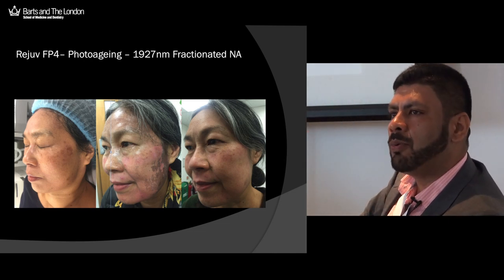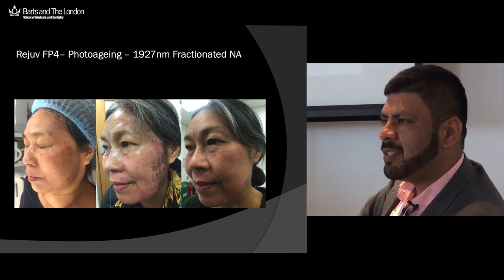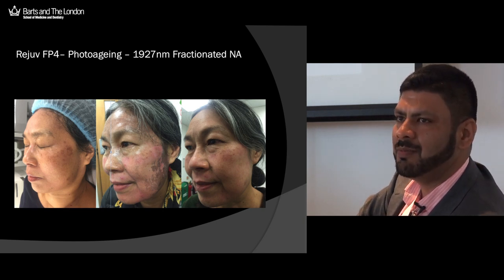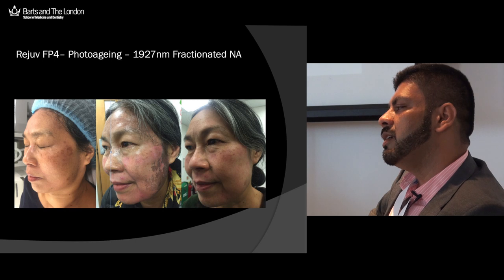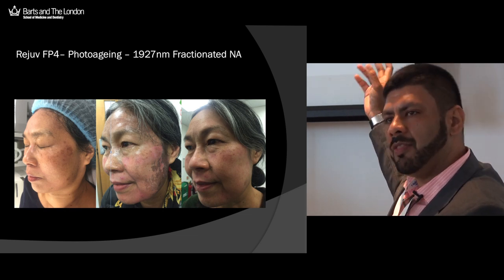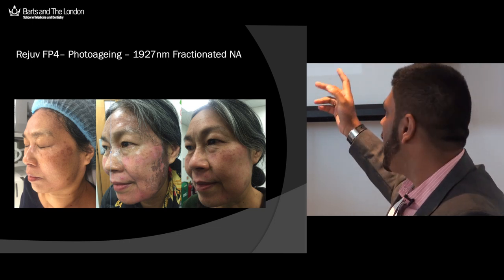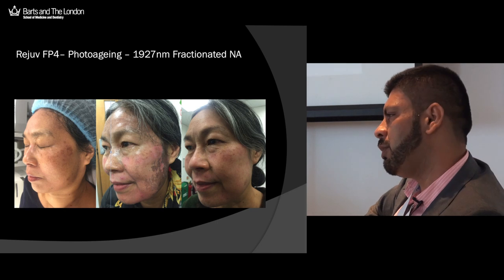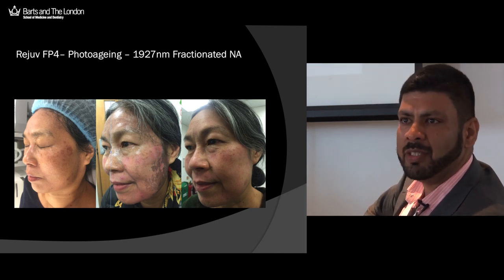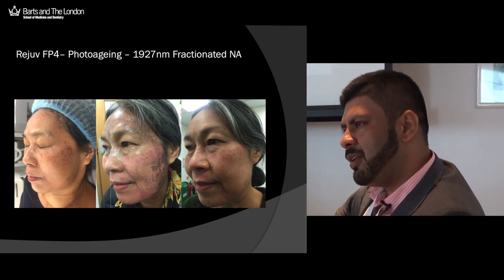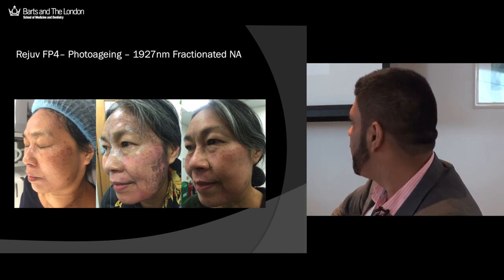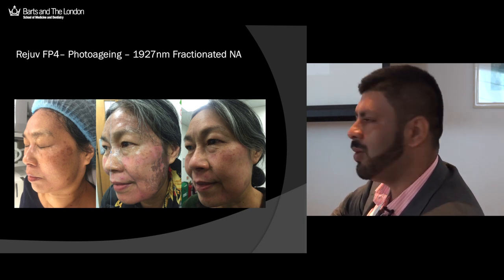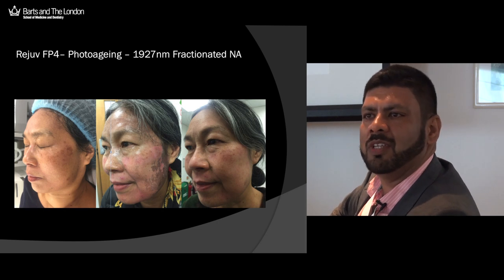Laser is a very safe and measured approach. This slide shows a Fitzpatrick IV skin type — the last thing you want is to cause pigmentation abnormalities in these patients. With laser, you can control skin damage and density very precisely. A chemical peel to achieve this level of effect would probably use something like a Jessner's combined with 25% TCA — and anyone who has done a lot of chemical peels will tell you that's stepping into risky territory. Not many people would do a Jessner's 25% TCA on a patient like this without losing some sleep over it.